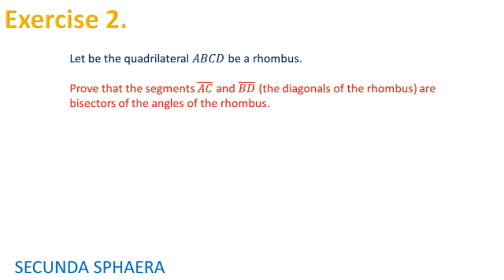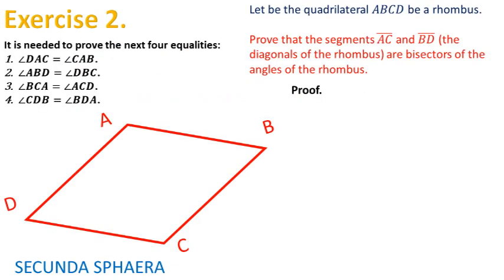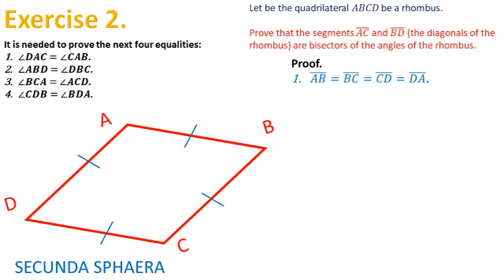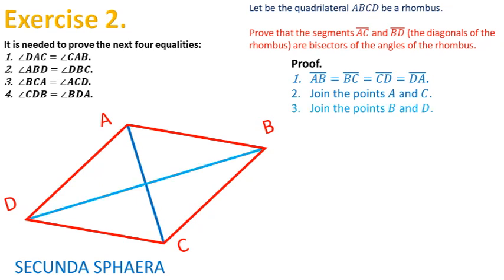The second problem states: let the quadrilateral ABCD be a rhombus, and asks to prove that the diagonals of the rhombus are bisectors of the angles of the rhombus. To begin the solution, it is better to first set aside the objective and start by the other information given in the statement, as was done in the first problem. The quadrilateral ABCD is a rhombus, so all of its sides are equal. The problem deals with the diagonals, so let's construct the diagonal AC and the diagonal BD. For the next step, it is noticed that the diagonal AC is equal to itself and that the diagonal BD is equal to itself.